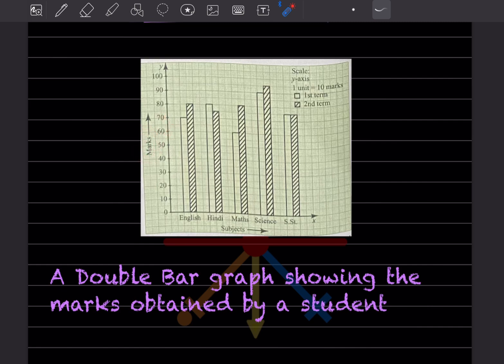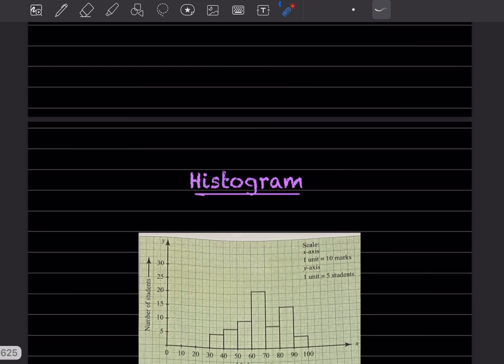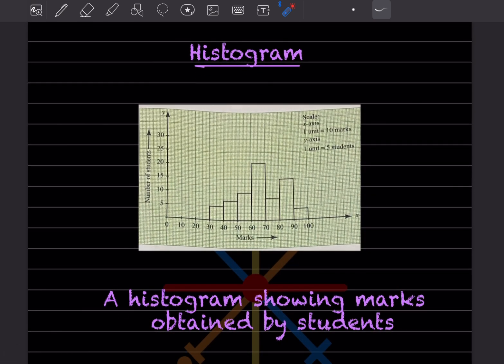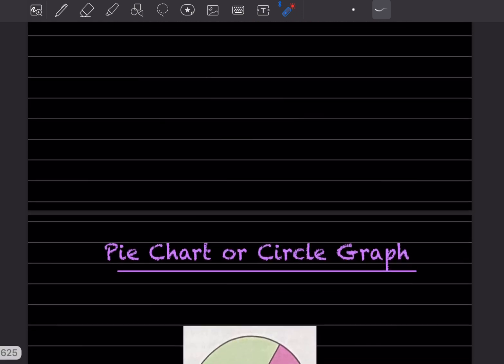Then the histogram. The histogram graph should look like this. This histogram is showing marks obtained by students.